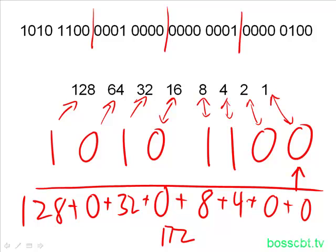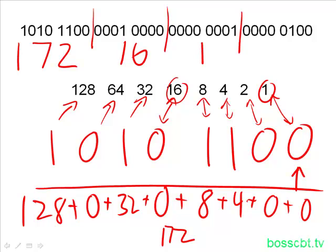That is how we determine the decimal value of the first octet: 172. You can see octets 2, 3, and 4 are actually much simpler because there aren't as many ones. Just by looking at these, we can do this pretty quickly. In octet 2, we see 16, because the one is in the fifth position. In the third octet, there's only one bit position with a 1 in it — the first one — which equals 1. And in the last octet, there's only one bit position with a 1, in the third position, which equals 4. So we have just completed converting binary to decimal. It's that simple.